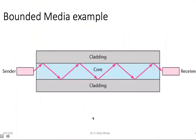Looking at this figure, you have a sender on one side — this is an example of bounded media which is an optical fiber. The signal is sent inside in the form of light waves. The principle used here is total internal reflection. The light is reflected completely inside; the inner material is called the core and the outer plastic material is called the cladding.